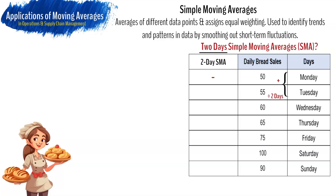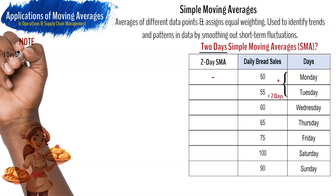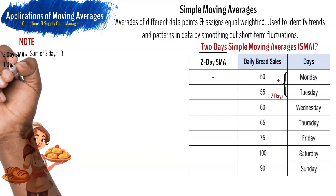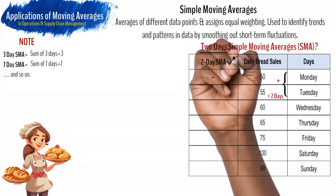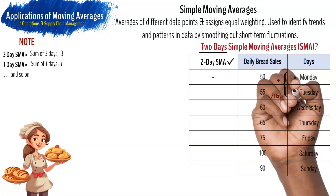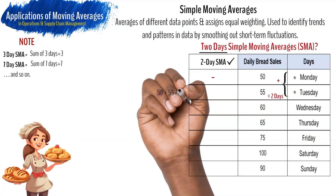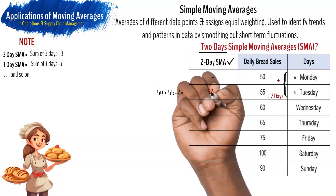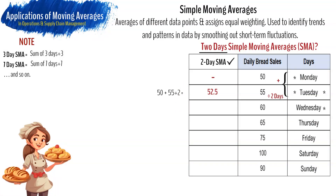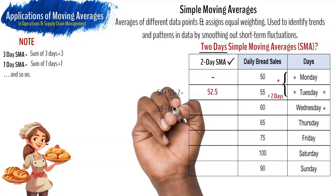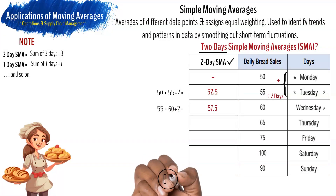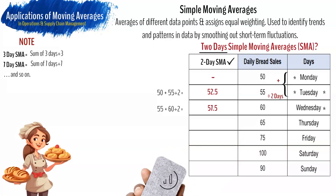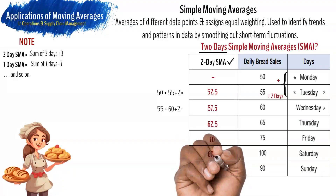Note that the number you divide by depends on the number of days or periods selected — for a three-day moving average it will be divided by three, and a seven-day moving average by seven, and so on. Here, we divide by two as we are considering the average of two periods. So Monday sales of 50 plus Tuesday sales of 55 divided by two gives us 52.5. For the next, we consider Tuesday and Wednesday — 55 and 60 respectively — summed and divided by two, giving a two-day moving average of 57.5. Let's now pause the video to give you an opportunity to complete the two-day moving average column. If you have calculated the values correctly, this is what your two-day simple moving average column should look like.